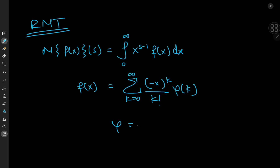Here phi is an analytic function — it's a kind of very specific Maclaurin-like series. So if you have this kind of function, then its Mellin transform works out to the gamma function evaluated at s times the function phi evaluated at negative s.